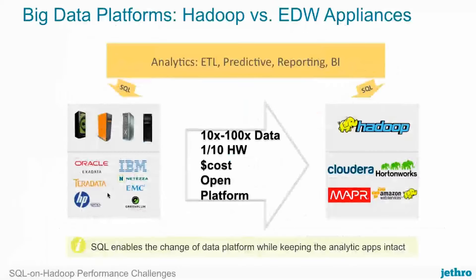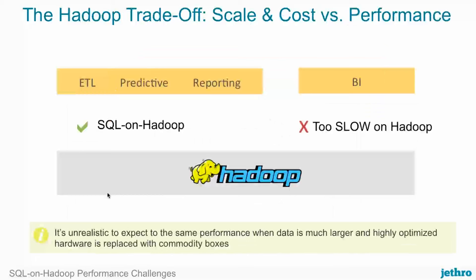People in the past have tried to work through this by using large EDWs like Exadata and Netezza. These are great, but they are pretty costly. With the emergence of Hadoop, there are people looking to store data in a much more cost-effective way. But you do pay for something, and that comes in the form of performance. Hadoop is great for your ETLs and predictive type of analytics, but when it comes to the resource-heavy BI drill-down applications, that's where you're going to need some sort of acceleration tool.